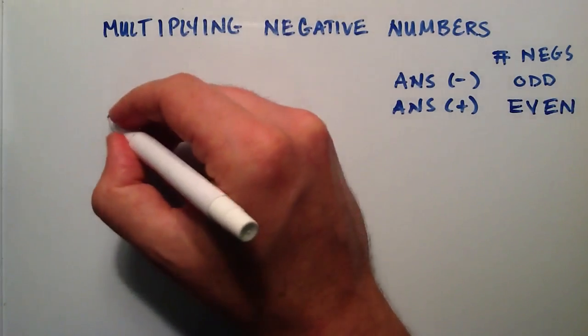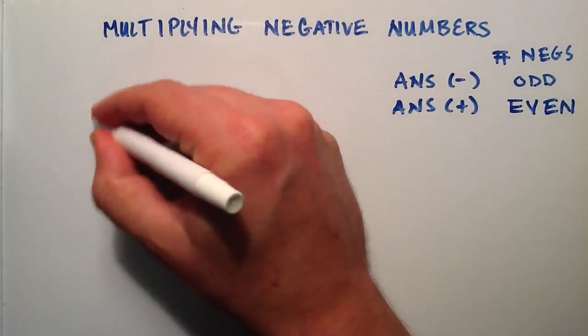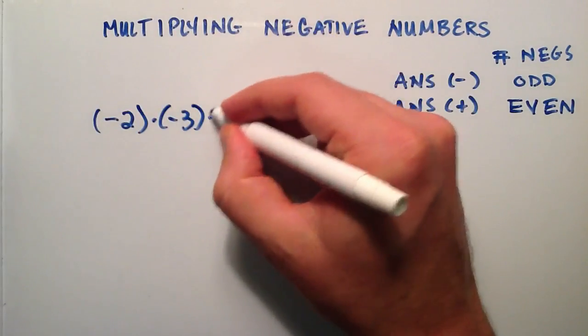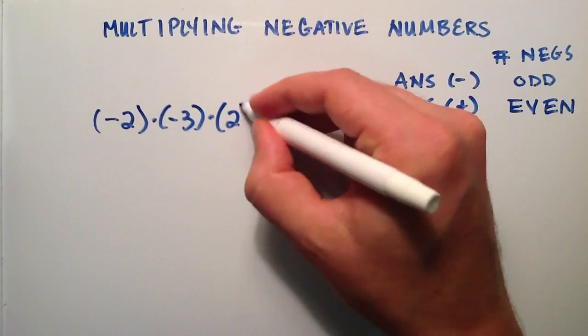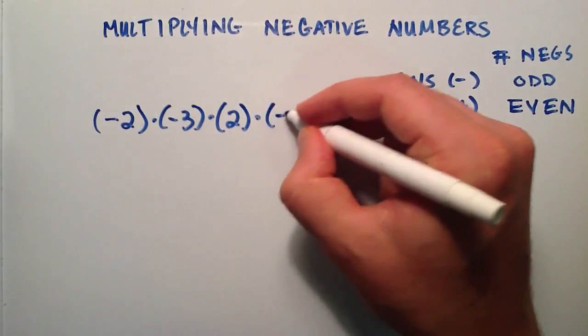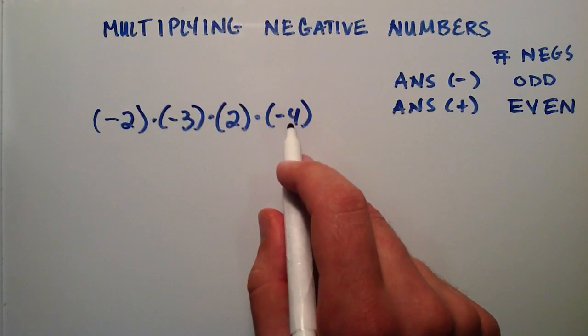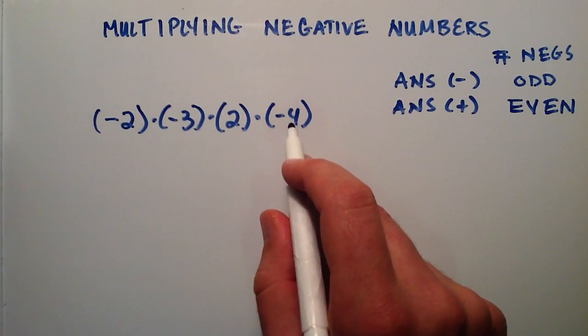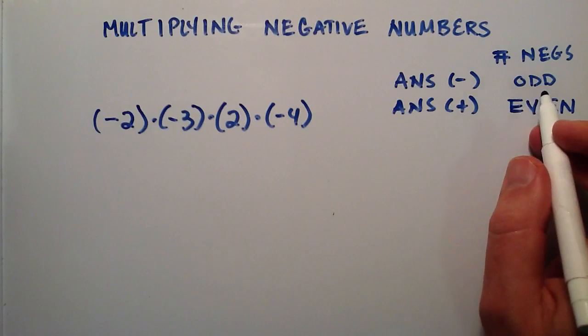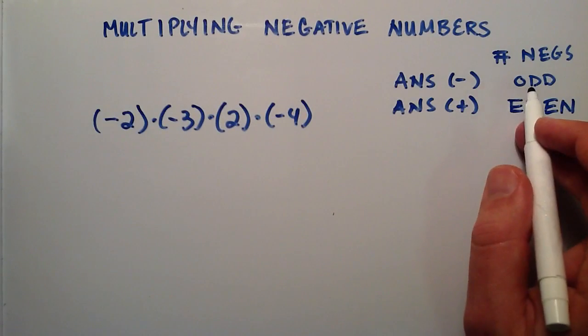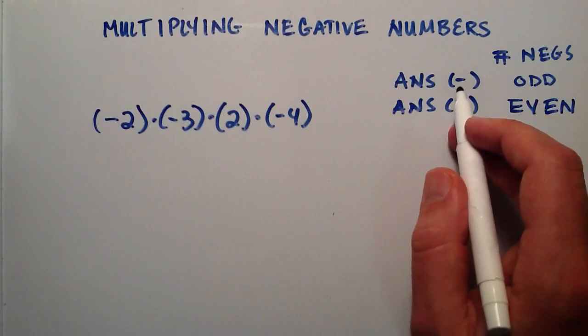So for example, if I'm multiplying the numbers negative 2 times negative 3 times positive 2 times negative 4, we have 1, 2, 3 of our numbers are negative. 3 is an odd number. So the number of negatives we have multiplied together is an odd number, which means that our answer will be negative.